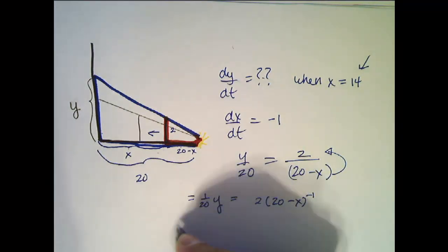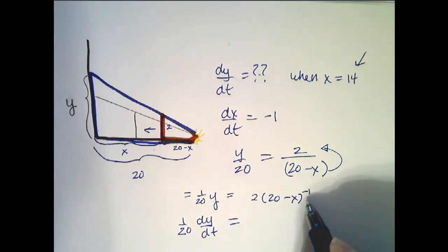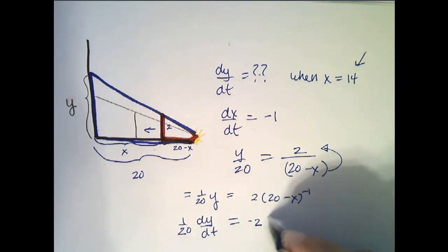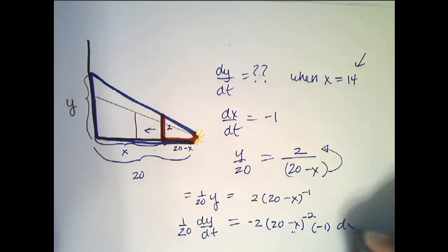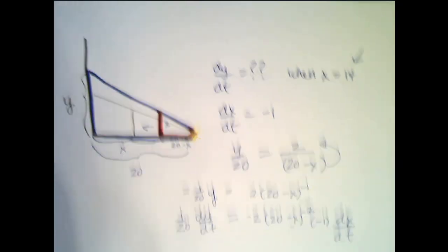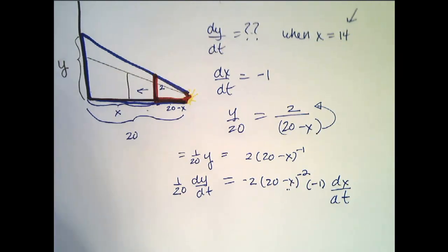So if we take the derivative of the left, we get 1 over 20 dy/dt equals, now we do the chain rule, negative 2, (20 minus X) to the negative 2 times the derivative of the inside, which is negative 1 times the derivative of X with respect to time. Remember, we're taking the derivatives with respect to time.